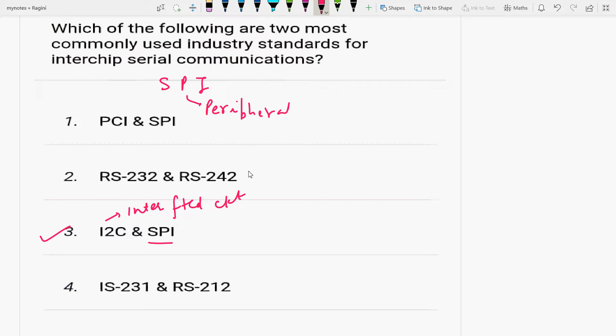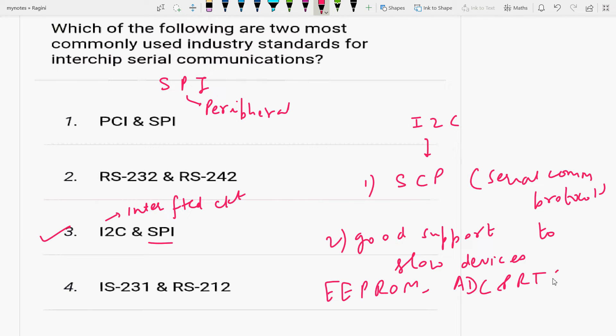There are two standard synchronous serial protocols that are widely used and accepted for serial communication. I2C is a serial communication protocol. It provides good support to slow devices like EEPROM, ADC, and RTC.